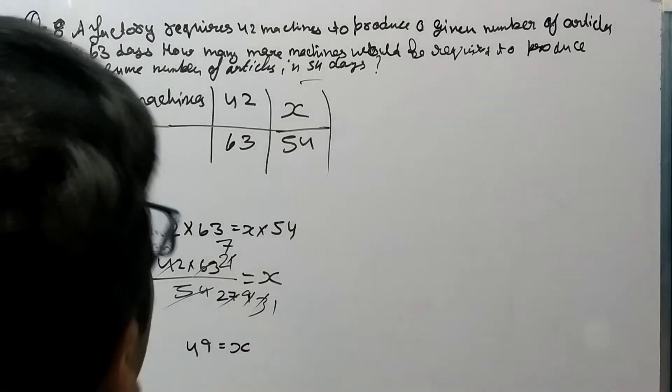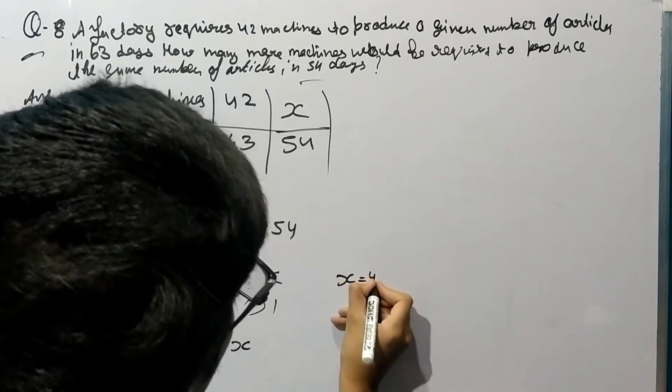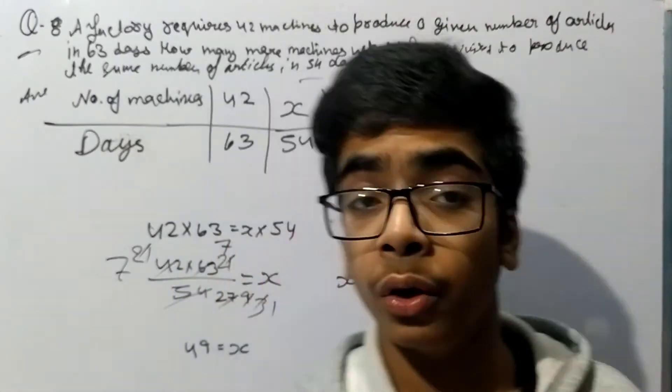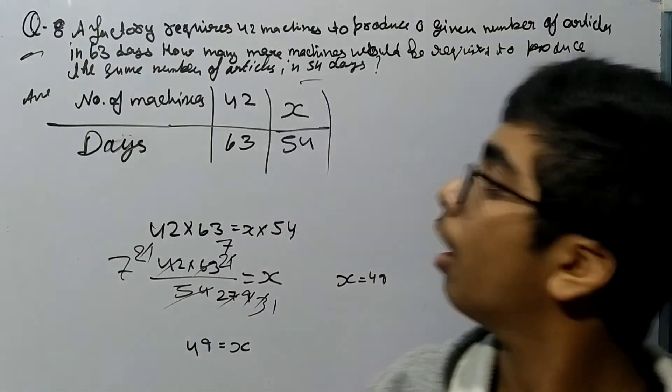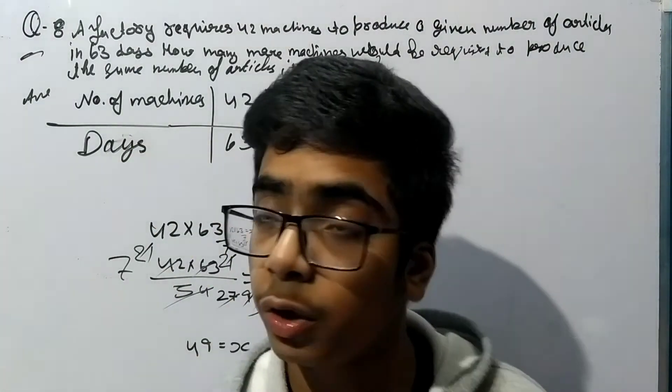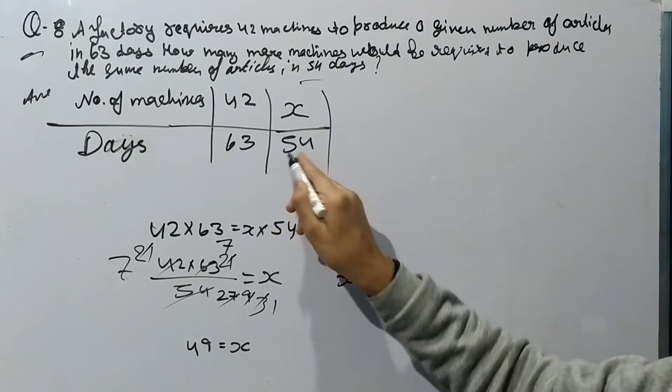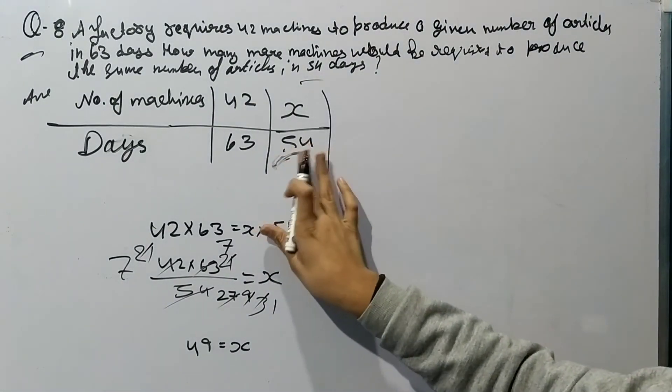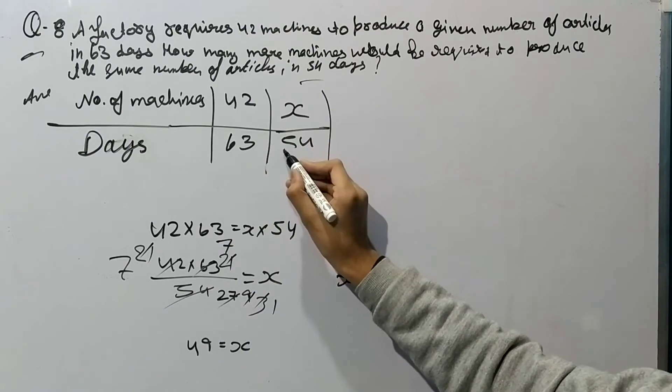to x. So x is equal to 49. This means 49 machines are required to produce the same amount of articles in 54 days.